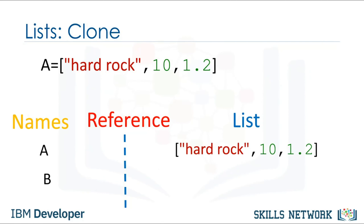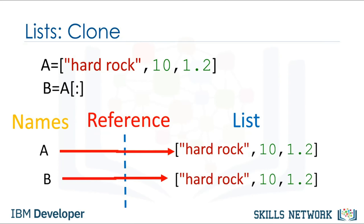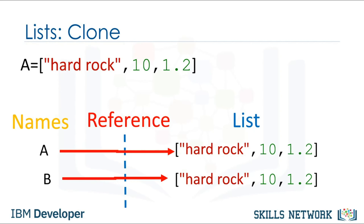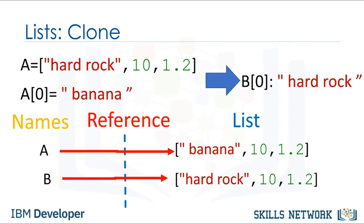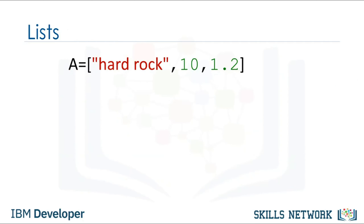You can clone list A by using the following syntax. Variable A references one list, while variable B references a new copy or clone of the original list. Now if you change A, B will not change. We can get more info on lists, tuples, and many other objects in Python using the help command — simply pass in the list, tuple, or any other Python object. See the labs for more things you can do with lists.